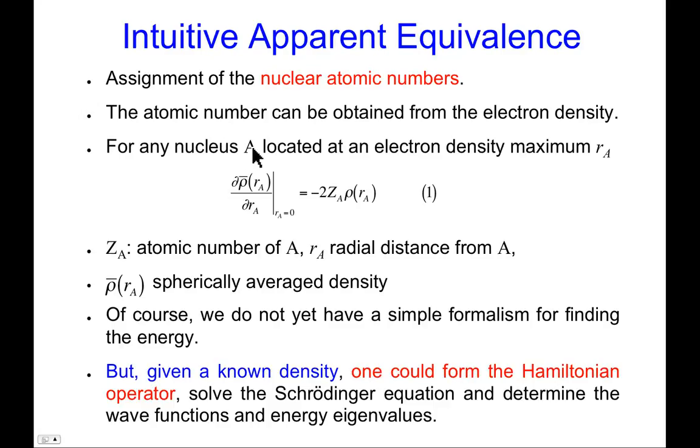And one can show that given a nucleus A, which is characterized by a nuclear charge, capital Z, the relationship between capital Z and the density is that the slope of the density, the change in the density, if you like, as you move away from the nuclear position, spherically averaged. So this bar over the top means you take the average of all the slopes, since you can move out in all directions in space from the nuclear position in all spherical directions. There's this relationship. So given the slope and given the value of the density at the nuclear position, you can then determine the atomic number.